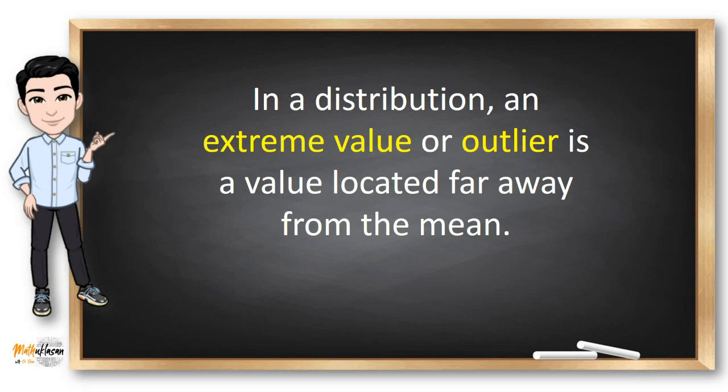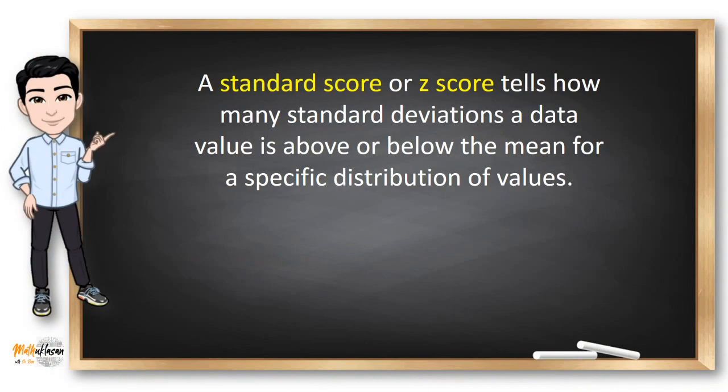An outlier may be due to variability in the measurement and sometimes the outlier is excluded from the dataset if it is an experimental error because it can cause serious problems in statistical analysis. A standard score or z-score tells how many standard deviations a data value is above or below the mean for a specific distribution of values.